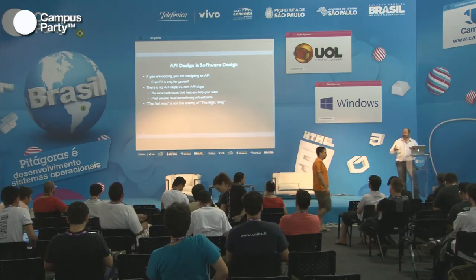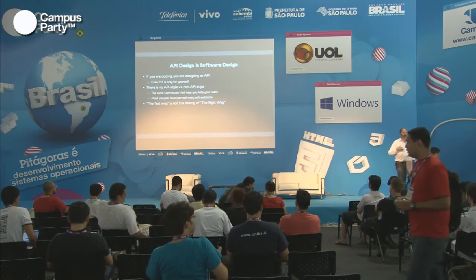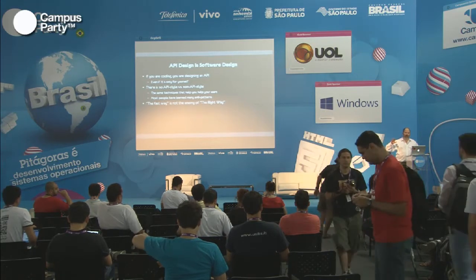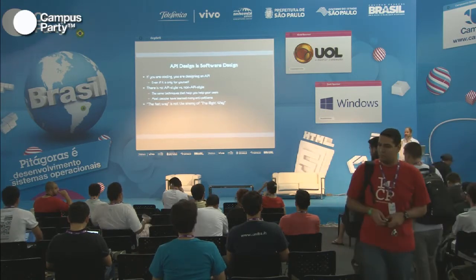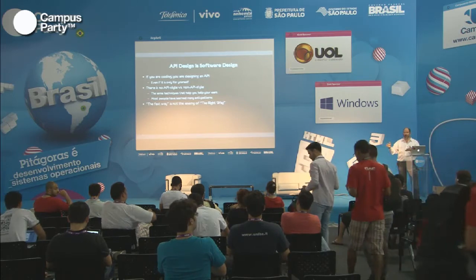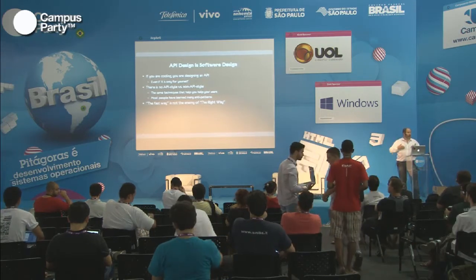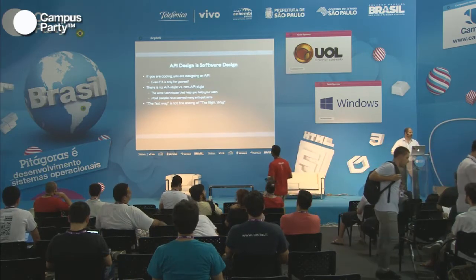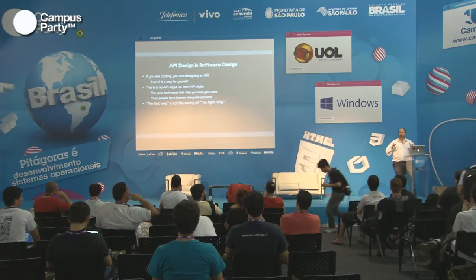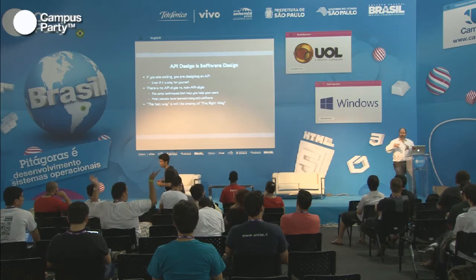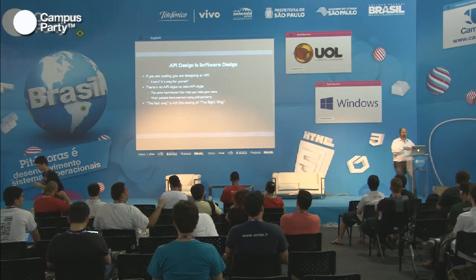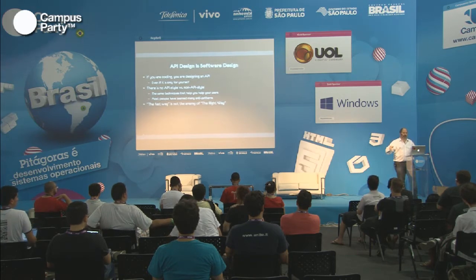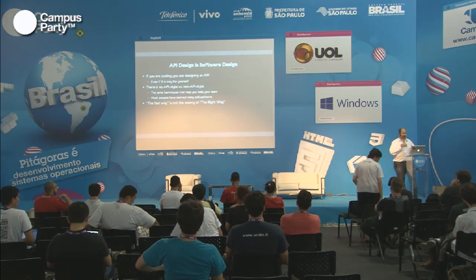There really isn't a style you should use when doing an API that doesn't also apply when you're writing any software. Some of this stuff is going to seem like normal programming advice, but it is also part of making a good API. And people sometimes get this idea that there is a fast way that is different than the right way. But the only difference is whether you pay in time fixing something later or whether you pay in time upfront.